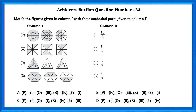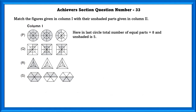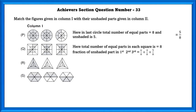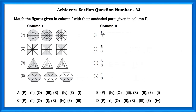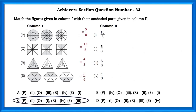Question number 33: Match the figures in column 1 with the unshaded parts in column 2. In the last circle, total equal parts is 8 and unshaded parts are 5, giving 5 by 8. In the squares, total equal parts in each square is 8, and the fraction of unshaded parts in the first, second, and third squares is 15 by 8. In the triangles, total equal parts in each shape is 3, and the fraction of unshaded parts in the second and third is 4 by 3. Similarly, one figure gives 6 by 6. Matching these, the answer is option C.